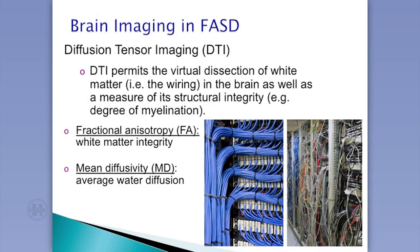DTI — diffusion tensor imaging — permits a virtual dissection of the white matter, basically the wiring of the brain, as well as a measure of the structural integrity and degree of myelination. We've got neurons connecting neurons in the brain, and this imaging is non-invasive and non-harmful. It follows water molecules through the brain, allowing you to map out actual tracks and see neurons connected from the frontal lobe to other areas. It looks at connections we weren't able to visualize 10 or 20 years ago.